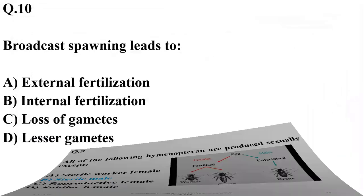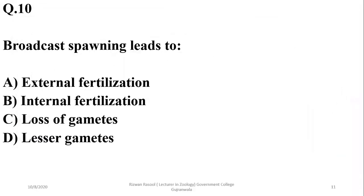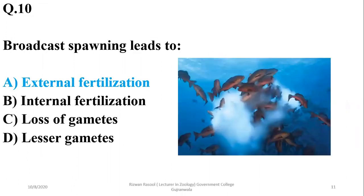Number ten: broadcast spawning means the release of a large number of eggs as well as sperms into the open environment. It usually leads to external fertilization and is a common strategy used by fishes.